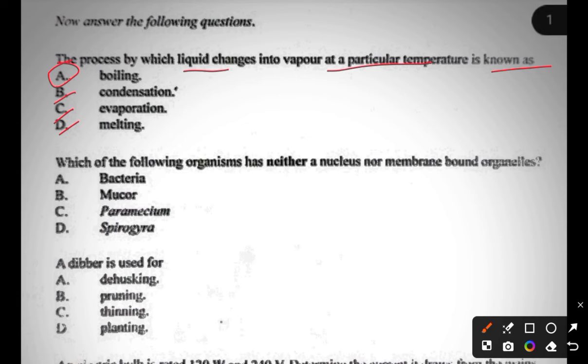Question two: which of the following organisms has neither a nucleus nor membrane-bound organelles? A bacteria, D mucor, C paramecium, B spirogyra. The answer to question two is A, bacteria.